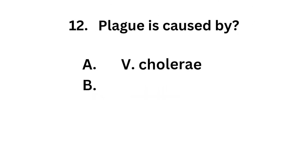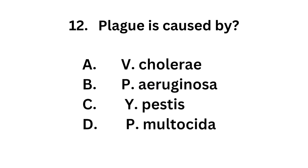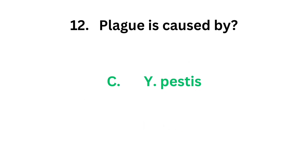Question number 12: Plague is caused by — Option A: Vibrio cholerae. Option B: Pseudomonas aeruginosa. Option C: Yersinia pestis. Option D: Pasteurella multocida. The correct answer is Option C, Yersinia pestis. Plague is caused by Yersinia pestis.